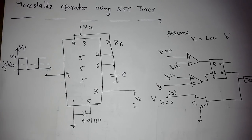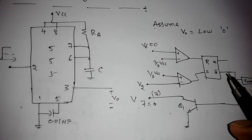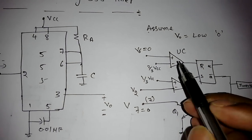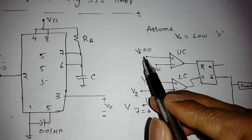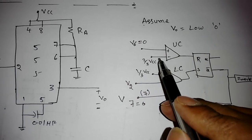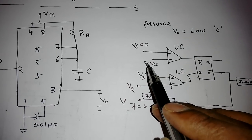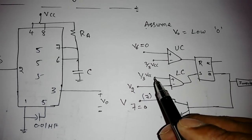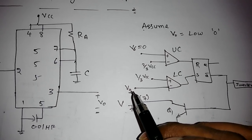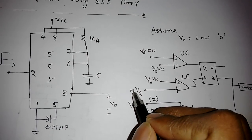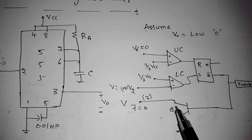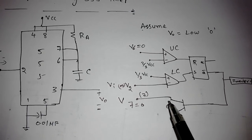If you see the internal circuit: this is the upper comparator and this is the lower comparator. The upper comparator positive terminal is connected to pin 6, which is the threshold terminal V6. The minus terminal is connected to 2/3 Vcc, which is the higher threshold voltage. Similarly, the positive of the lower comparator is connected to 1/3 Vcc, and the negative terminal is connected to the trigger terminal, that is V2. Pin 7 is connected to a transistor called the discharge terminal.